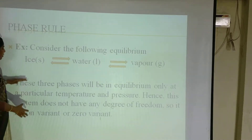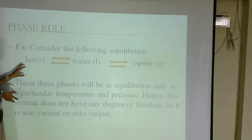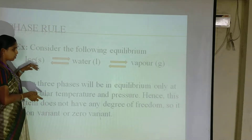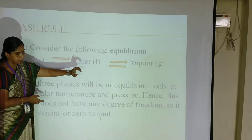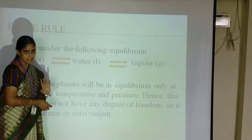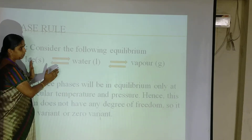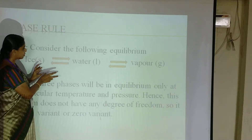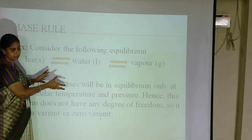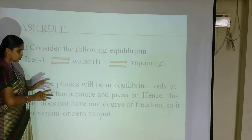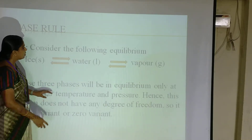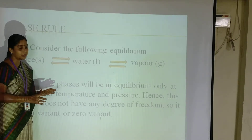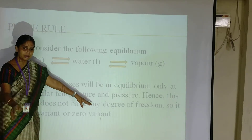Now we are explaining these factors with the help of an example: ice, water, and vapor. Ice is the solid phase, water is the liquid phase, and water vapor is the gaseous phase. So here we are having three phases. The smallest variable component is water. Here the degree of freedom is zero — temperature, pressure, and concentration are not playing any role. So here it is not having any degree of freedom.